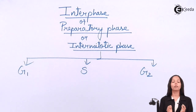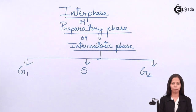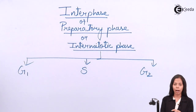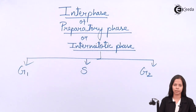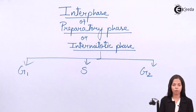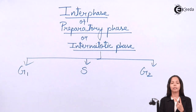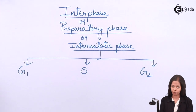Two important things happen in interphase apart from other things: cell growth, and synthesis of important chemicals. The most important chemical of our body is DNA or nucleic acid. These are the two important things happening in interphase.